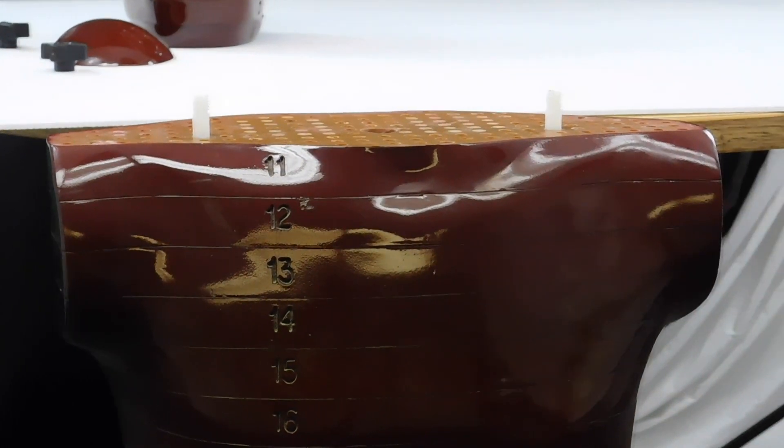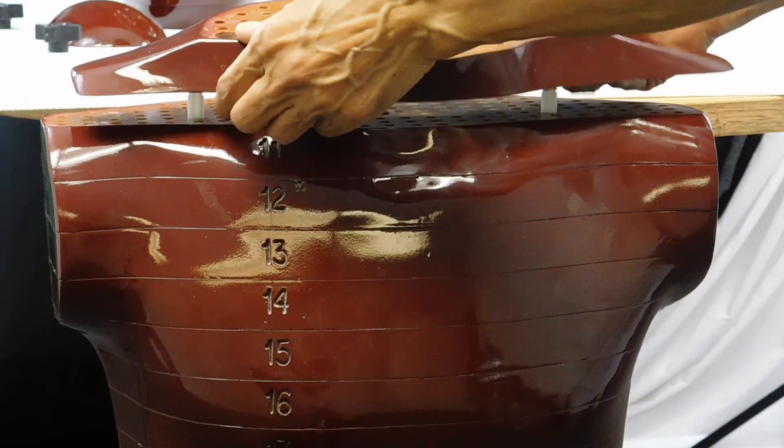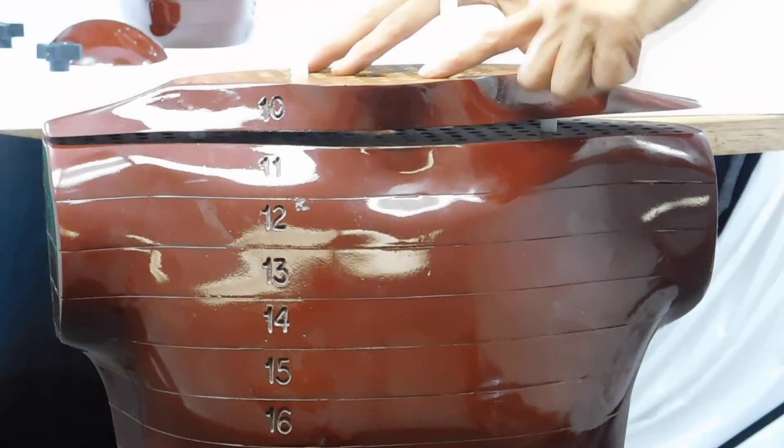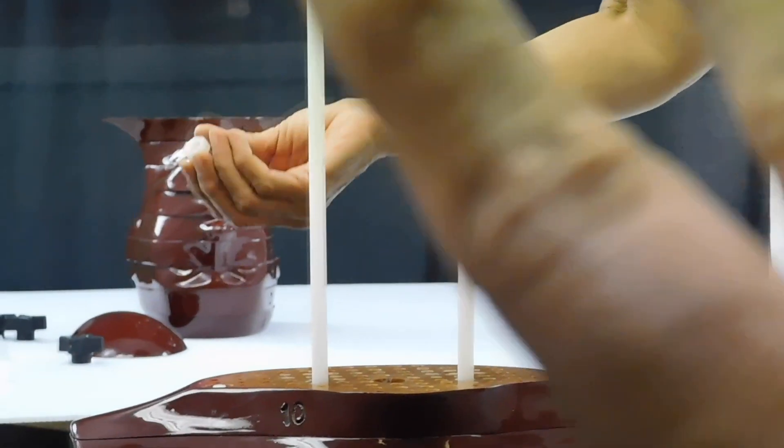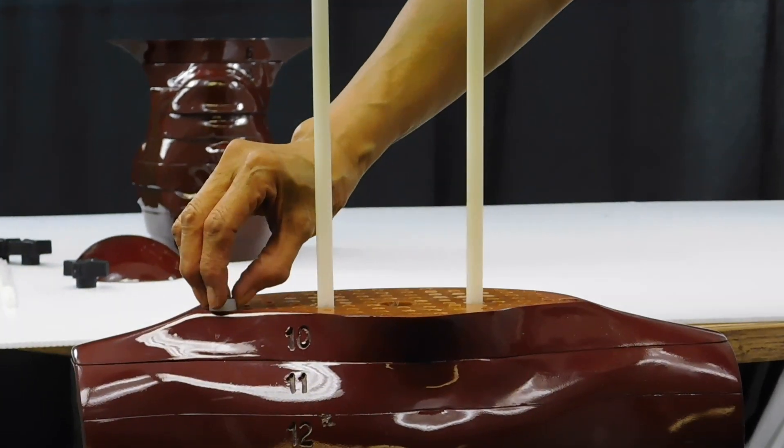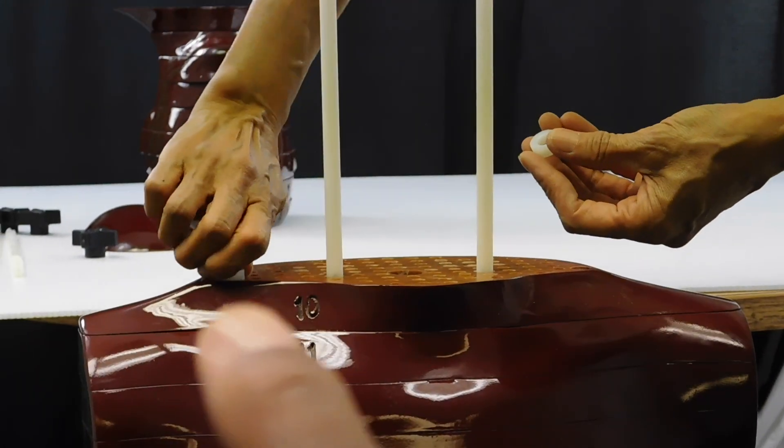For the next step, place section 10 on top and secure the original nylon rods with the hex nuts provided.